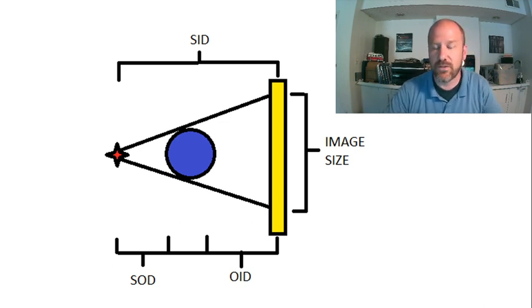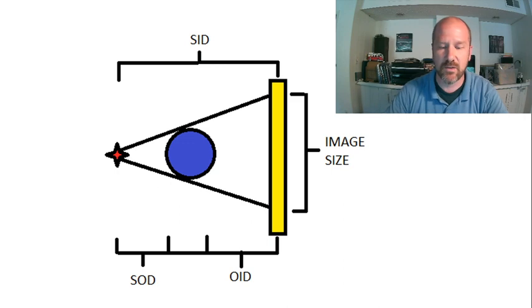But as you can see, with just keeping the SID the same, as we increase the OID, we would expect the image size to be magnified. And so we would call this a form of shape distortion.